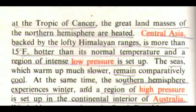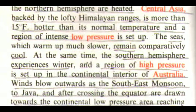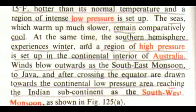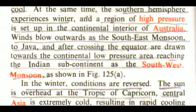The seas, which warm up much slower, remain comparatively cool. At the same time, the Southern Hemisphere experiences winter, and a region of high pressure is set up in the continental interior of Australia. Winds blow outwards as the southeast monsoon to Java, and after crossing the equator, are drawn towards the subcontinental low-pressure area, reaching the Indian subcontinent as the southwest monsoon, as shown in the figure.